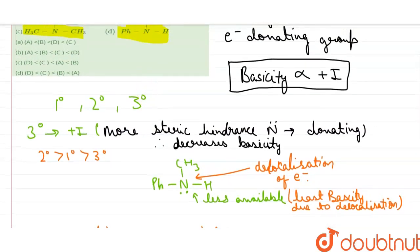So the correct option is C, that is D < C < A < B. Thank you.